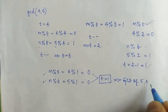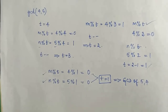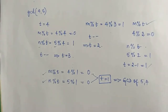So the GCD of 4 and 5 is equal to 1. In this way we apply the CIC algorithm to find the GCD of any two given numbers.